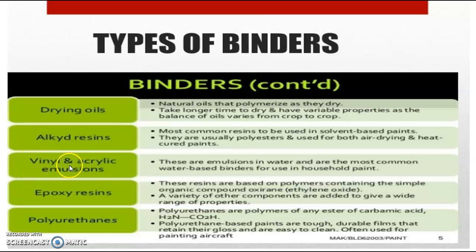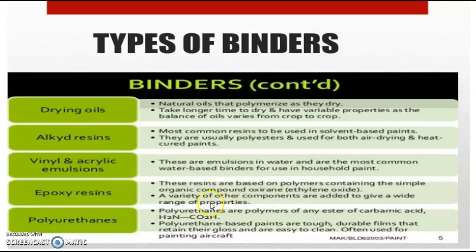The third type is vinyl and acrylic emulsions. These are emulsions in water and are the most common water-based binders for use in household paints. Next is epoxy resins. These resins are based on polymers containing the simple organic compound oxyranes — oxyranes are nothing but ethylene oxides. A variety of other components are added to give a wide range of properties, which also come under additives.